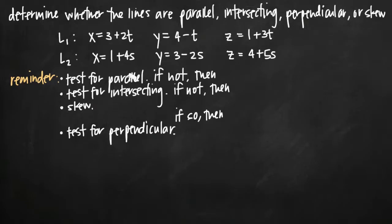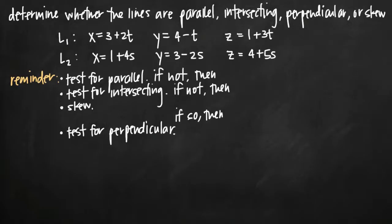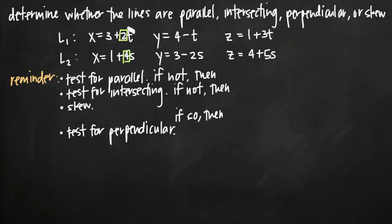The first thing we want to do is test for parallel. We're going to take the coefficient values on our parameters — also called our direction numbers — and take the ratio of each, setting those equal to each other to see if the equation holds true. We take the coefficients on our parameter values: the coefficient on t is 2, and the coefficient on s is 4. Both of these parametric equations are equations for x, so we take the ratio 2 over 4.